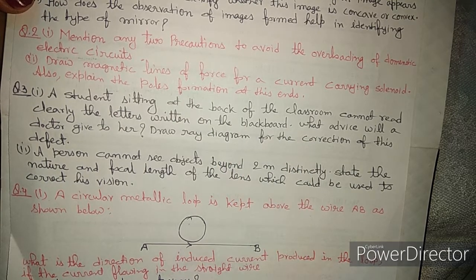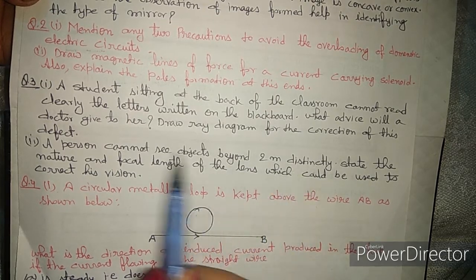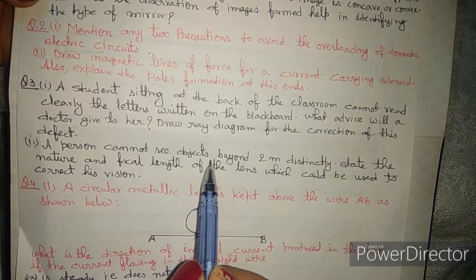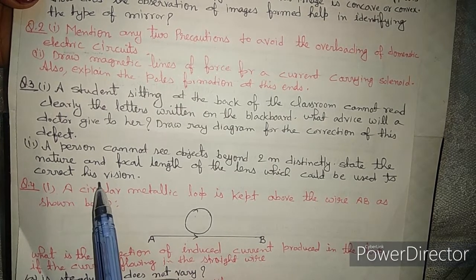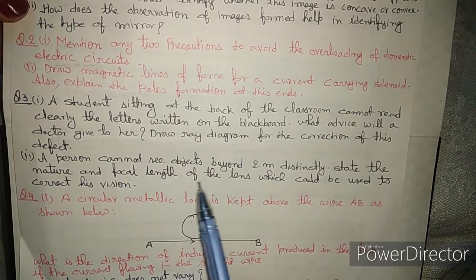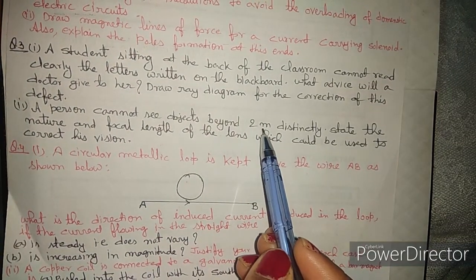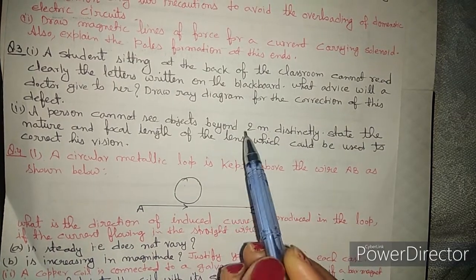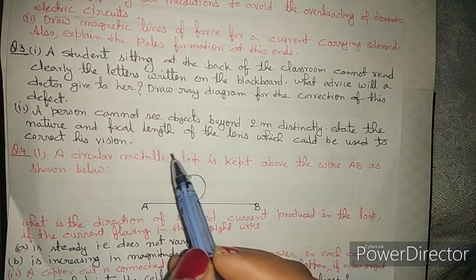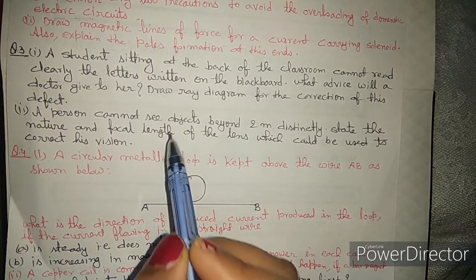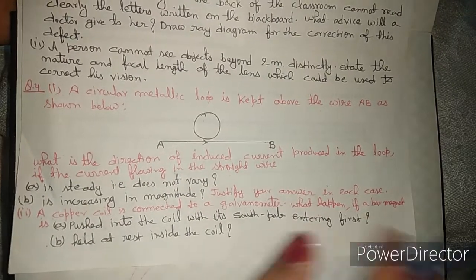The second part of question three: a person cannot see objects beyond 2 metres distinctly. State the nature and focal length of the lens used to correct this vision. Here, 2 metres is the image distance V, and U becomes infinity. Using the lens formula — 1/V minus 1/U equals 1/F — you can calculate the focal length. Whether F is positive or negative will also tell you the nature of the lens, completing question three.